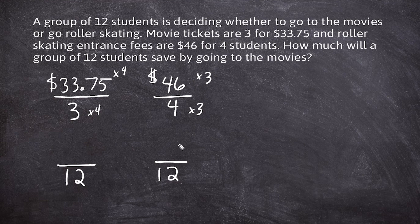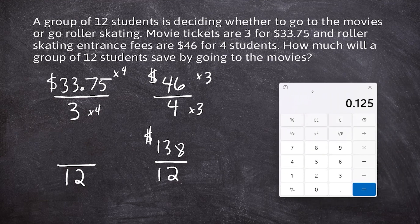Three times six is 18, carry the one. Three times four is 12, plus one is 13. So it would cost $138 for 12 students to go roller skating. Now we take $33.75 and multiply that by four using a calculator, and that gives us $135.